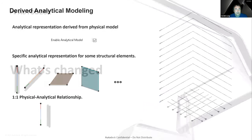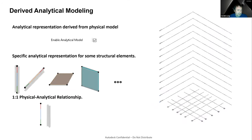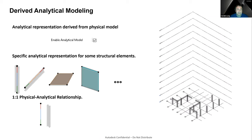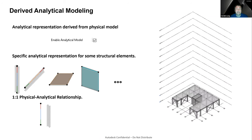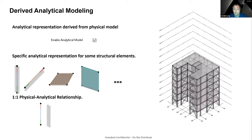What's changed comparing with the current solution? The current solution — we call it the derived analytical model — mostly because the analytical representation is derived from the physical one. It always depends on the physical representation. Only a few elements have the capability to derive the analytical model: beam, columns, floors, walls, panels, slab edges, and a few others, but not always.